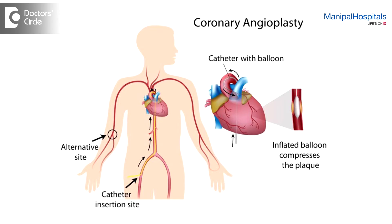Angioplasty is a process of implanting a stent. In angioplasty, you go from a hand artery — the radial artery — or the leg artery, take a catheter, and reach the coronary arteries. By reaching the coronary vessels of the heart, you can identify whether there is a block or not. If there is a block that needs treatment by angioplasty, the further steps are carried out.